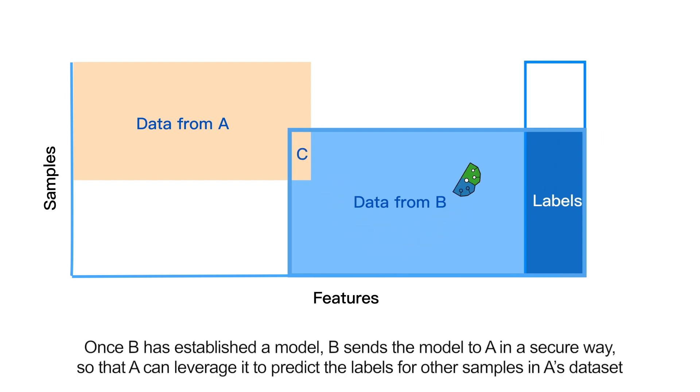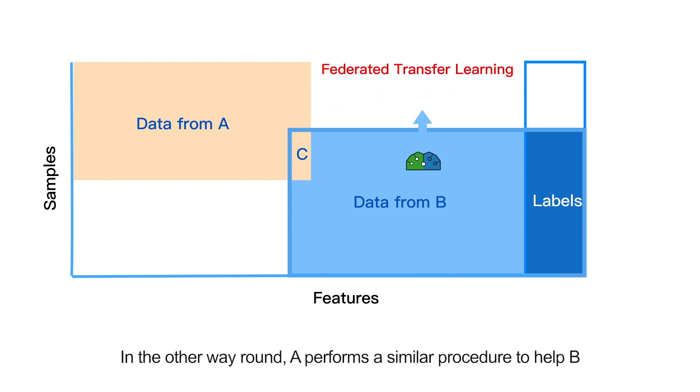The basic idea is that party B can use the overlapping sample C to predict the missing features in B's data that do not belong to party A. Once B has established a model, B sends the model to A in a secure way so that A can leverage it to predict the labels for other samples in A's dataset. In the other way around, A performs a similar procedure to help B.